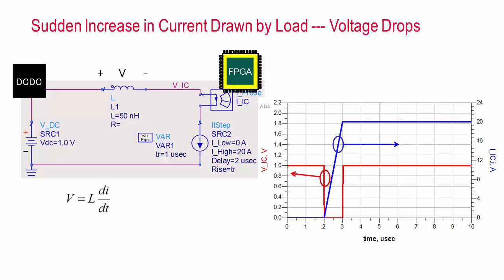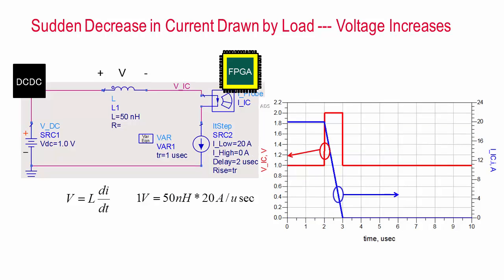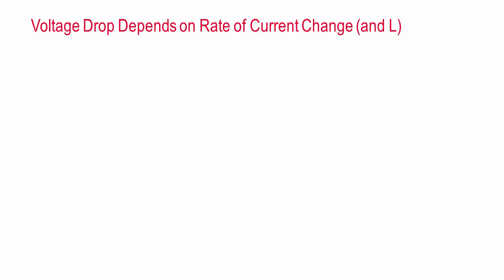If the rise time of the pulse is, for example, 1 microsecond, di dt equals 20 amperes per microsecond, and 50 nanohenries times 20 amperes per microsecond equals 1 volt. So the voltage at VIC would drop to 0 while the pulse is rising. Similarly, if the current pulse decreased from 20 amperes to 0, VIC would rise by 1 volt to 2 volts. What could you do to mitigate this problem?